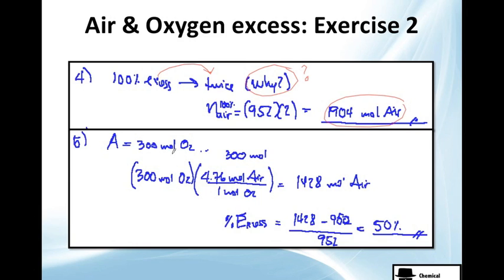Now, we go to number five. Which is, if we only have 300 mol of oxygen, how much mol of air will be extra? So you have this. We change it to air. 1 mol of O2 is 4.67 mol of air. And you get this value here. The excess will be simply the difference between these and the theoretical and you get 50%. And that's everything for this example.